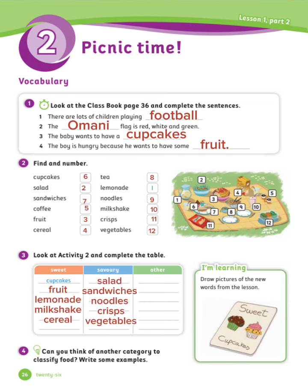Next, we have savory food: salad, sandwiches, noodles, crisps, vegetables. The other type of food is: tea, coffee.